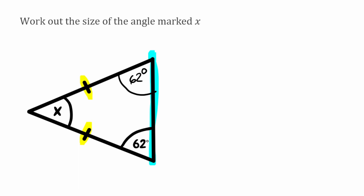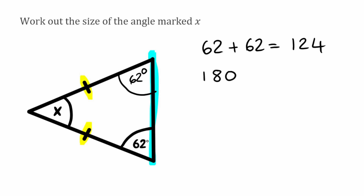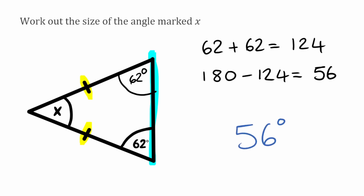So how do we find the missing angle x? We're going to add up the angles that we know: 62 add 62 gives us 124. Then because x is the final missing angle, we take 124 away from 180, which leaves us with 56. So our missing angle marked x for this one is 56 degrees.